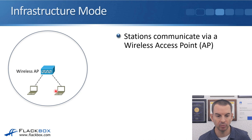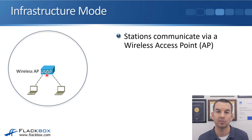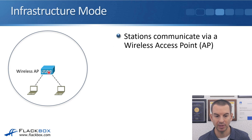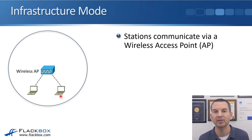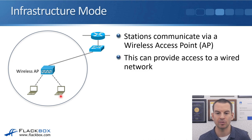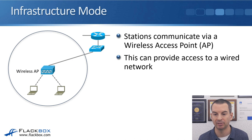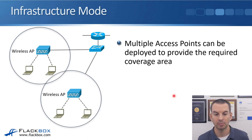With infrastructure mode, the two laptops send frames to the wireless AP, and the AP forwards those frames on. The wireless AP also has its own coverage area. This solves the scalability issue in two ways: first, the wireless AP can be connected to the wired network, giving wireless devices access to that entire wired network and beyond. Second, you can deploy multiple wireless access points to get coverage across the entire area you need.